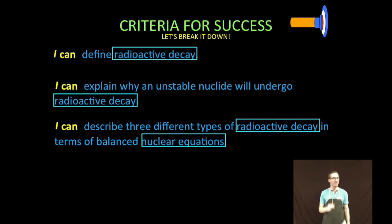Taking a moment to break it down: first, we're going to define what radioactive decay is. Number two, we're going to explain why an unstable nuclei will undergo radioactive decay. And finally, number three, we are going to describe three different types of radioactive decay in terms of balanced nuclear equations.